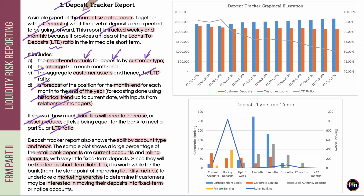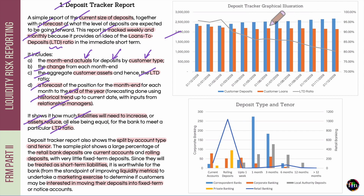One can also plot the deposit tracker report graphically. The blue bars denote how deposits have been changing over time — up until this point we have actuals, beyond this point we have forecasted numbers. The red or orange bars denote how loans have been changing over time. Deposits and loans are showing a diverging kind of behavior, and because of this, the LTD ratio — plotted as the gray line — is actually going down with time.